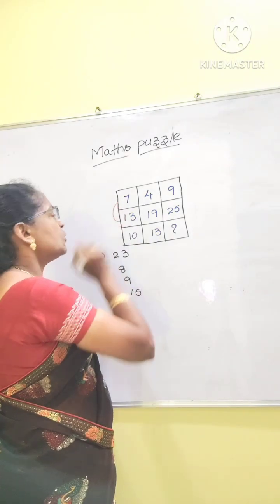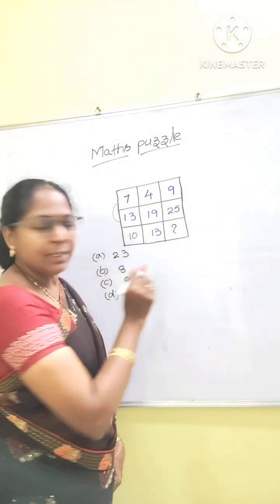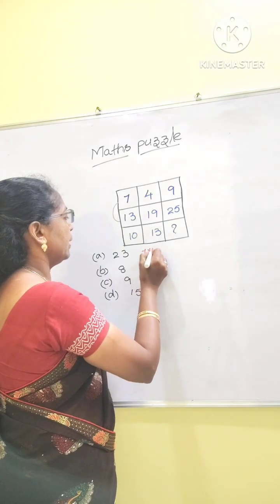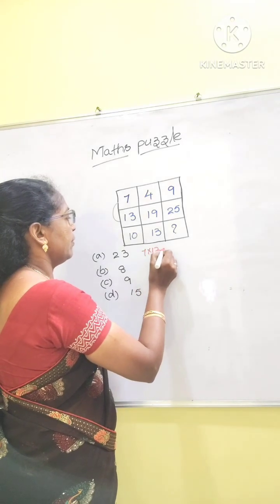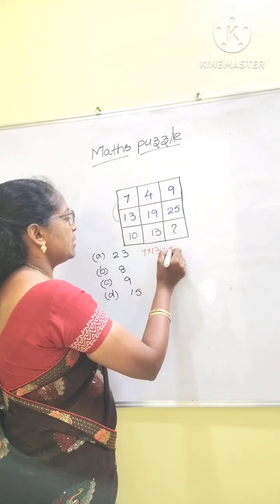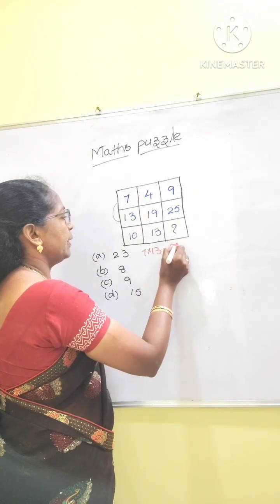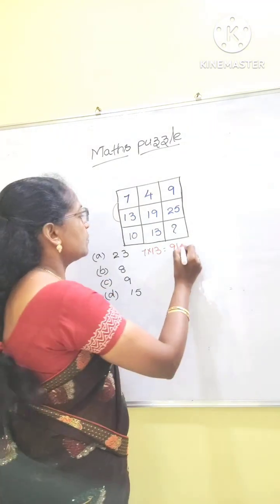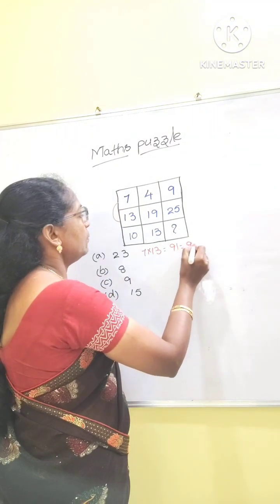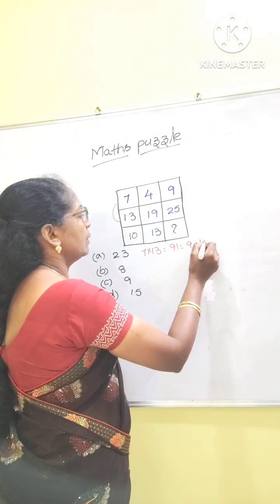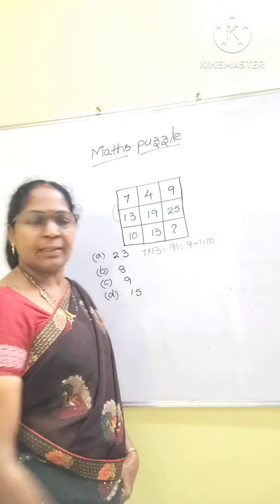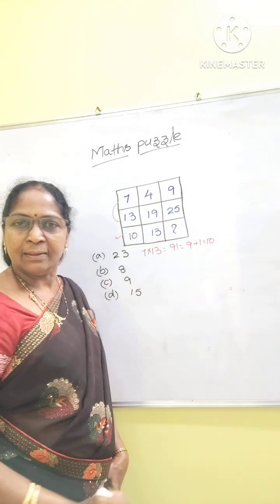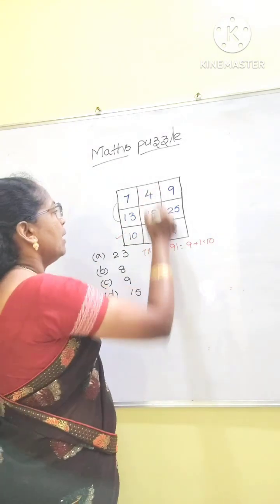These two you should multiply. 7 into 13, that is 91. 9 plus 1 equal to 10. This is a 5.